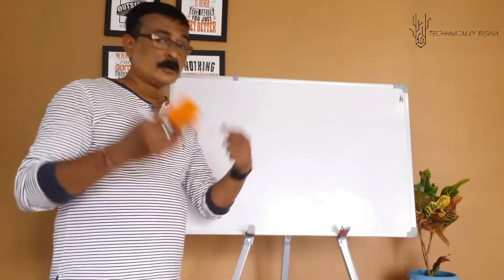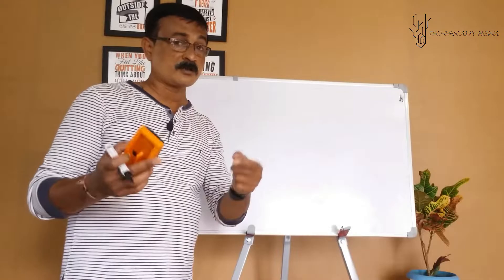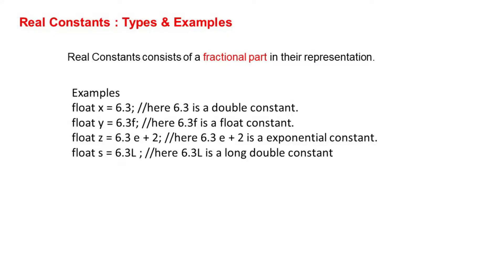Have a look at this slide for examples of real constants. float x = 6.3 — note that 6.3 is a double constant, even though x is a float variable. 6.3f is a floating point constant. And 6.3L is a long double constant.